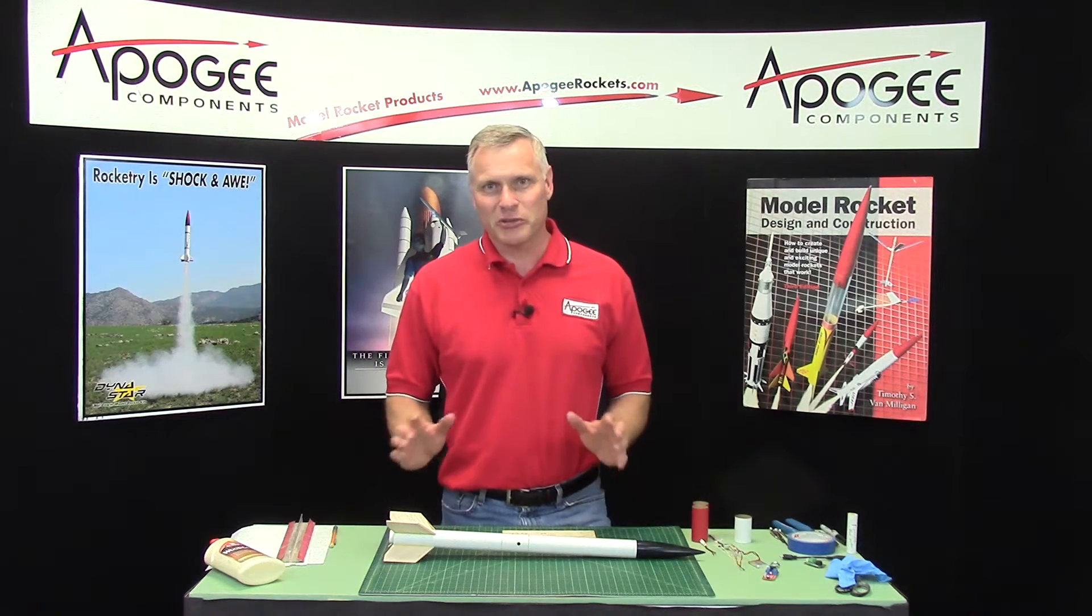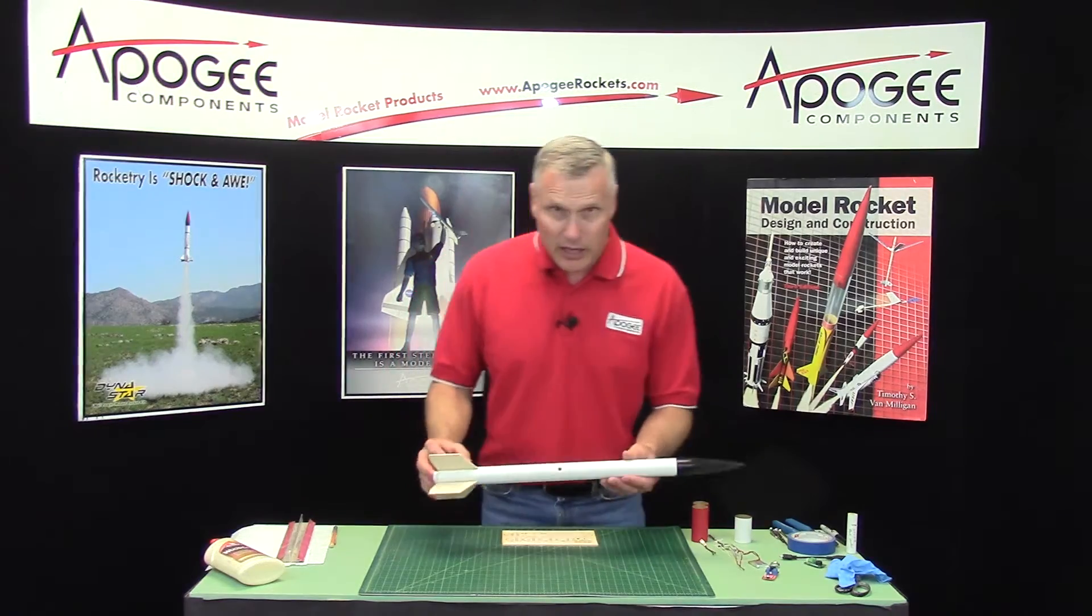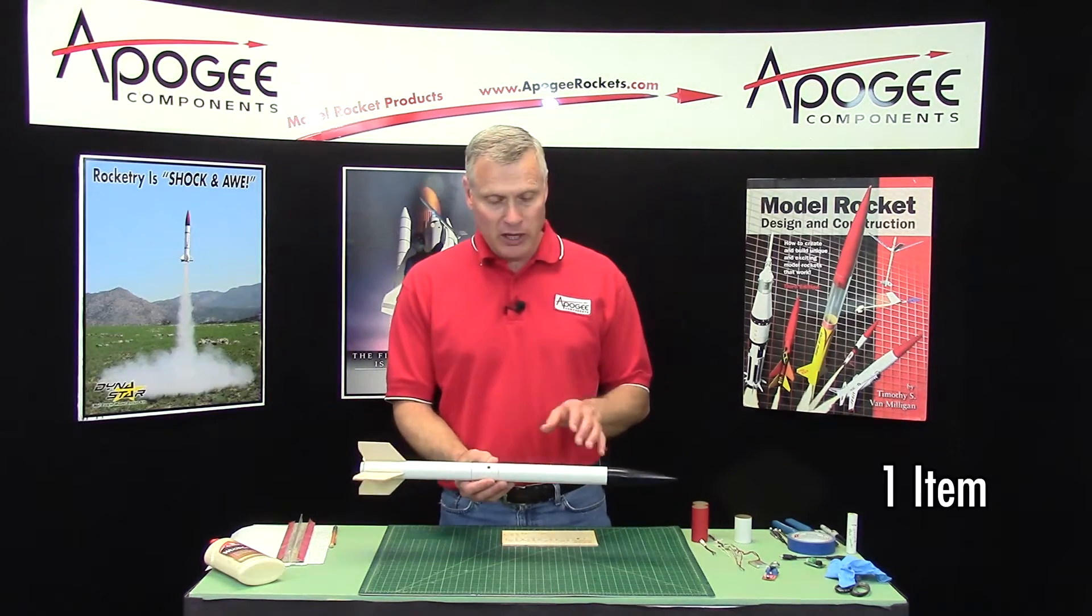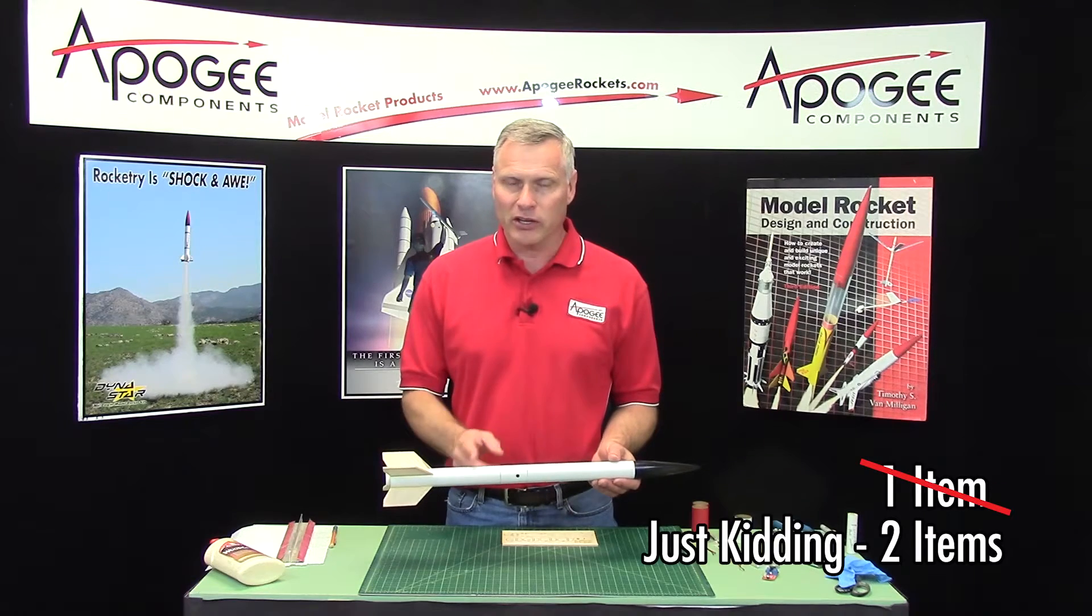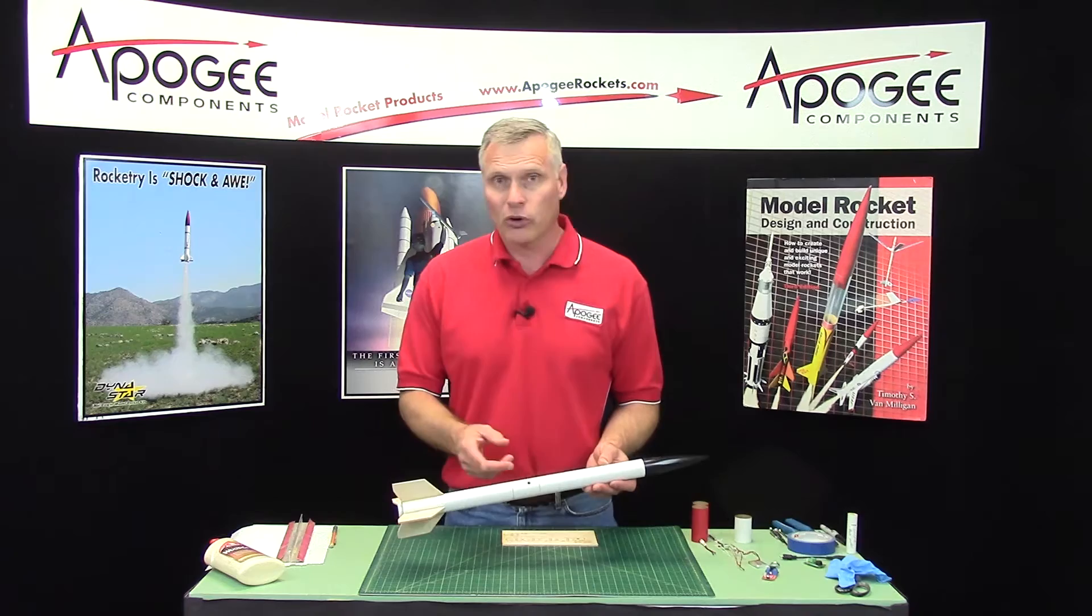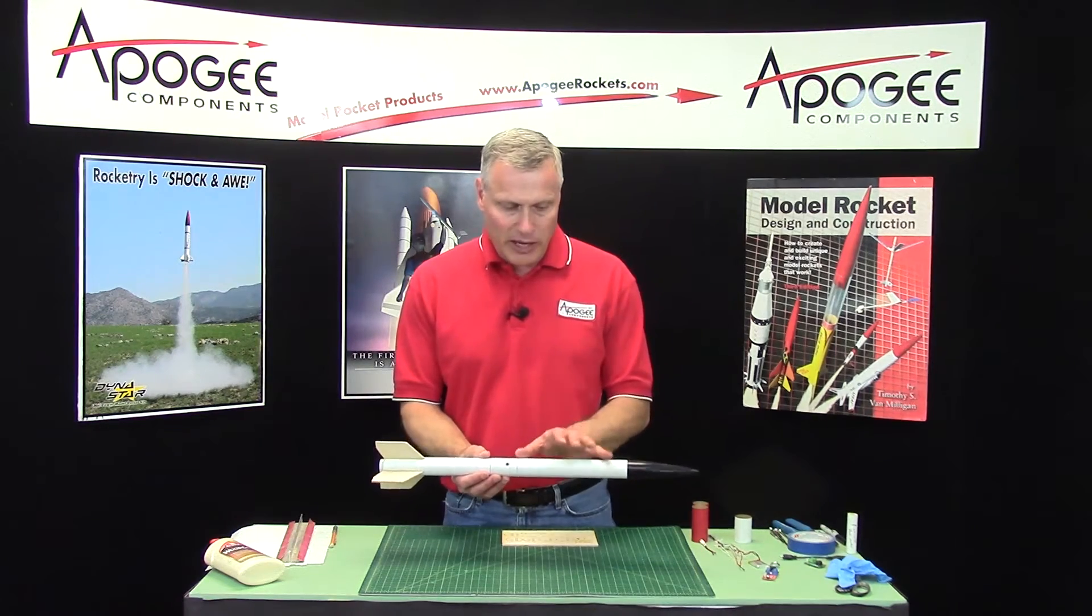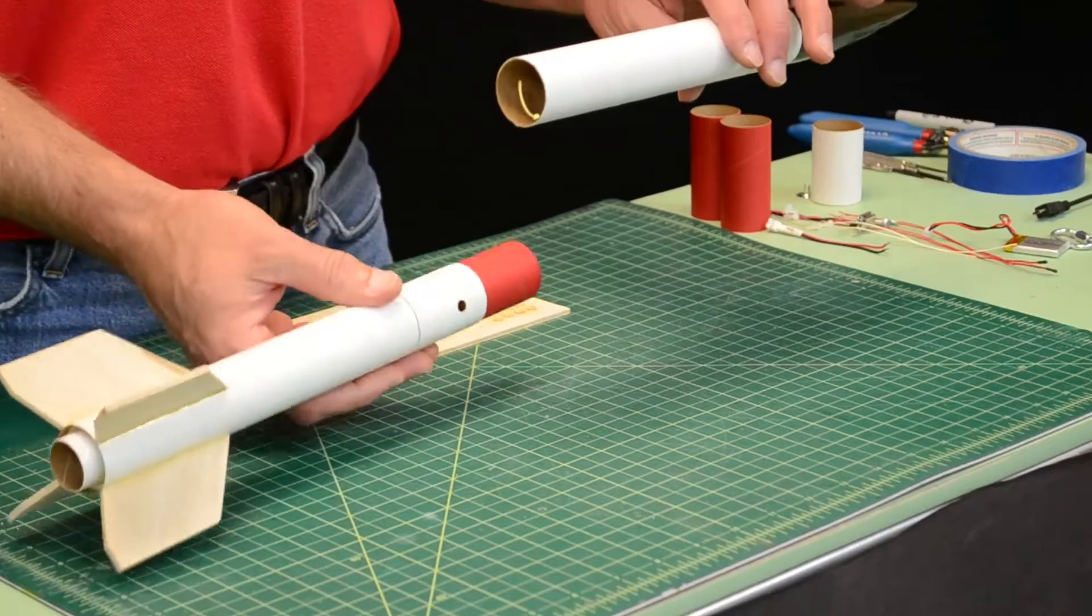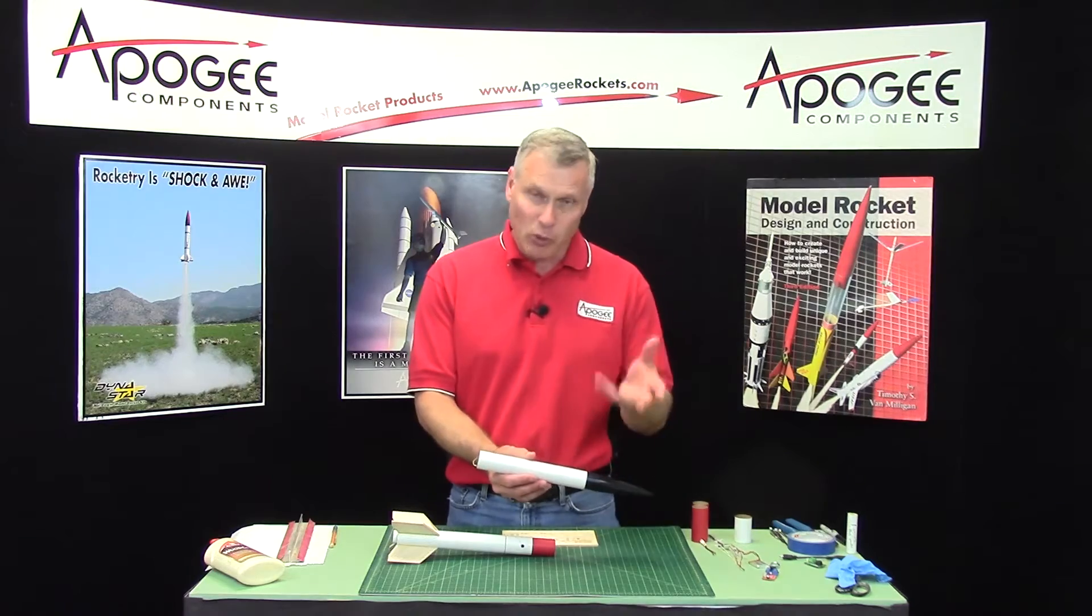In the last video, I showed you some of the supplies you're going to need to build your dual deployment rocket, and I forgot to mention one item: a body tube and a rocket kit. You're going to need a rocket kit, either a BT-55 if you're building that ebay, or a 29mm. You're also going to need a body tube here to put the parachute for the second dual deployment.